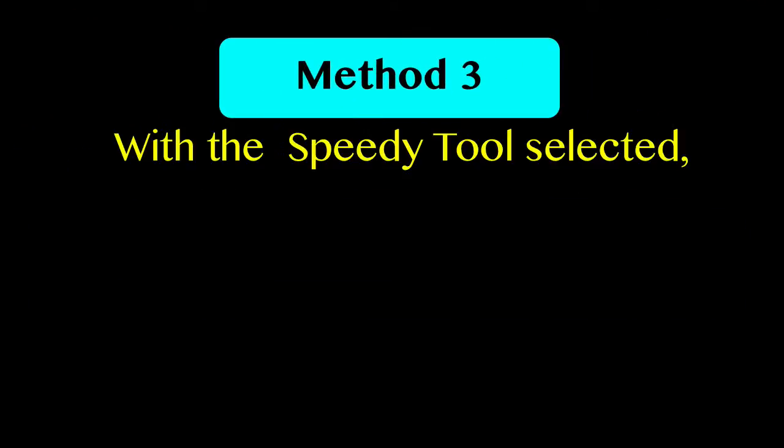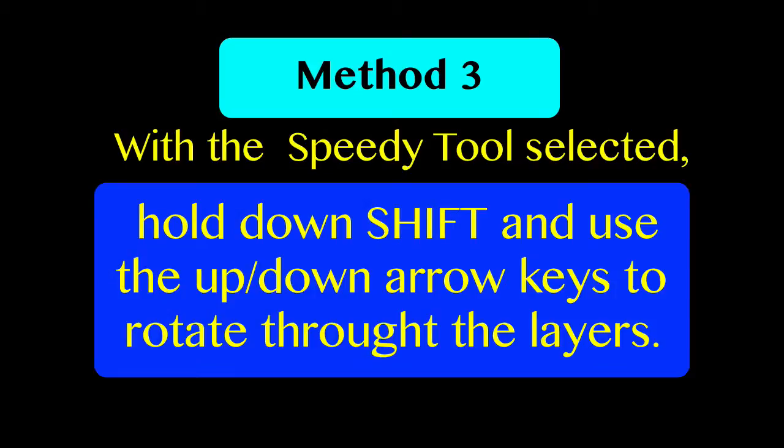When working in the speedy entry tool you can rotate through the layers incrementally by holding command and pressing the up and down arrow keys.